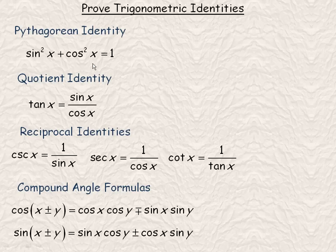There are three Pythagorean identities. The one we're going to focus on is sin²x + cos²x = 1. The quotient identity is tan x = sin x / cos x.